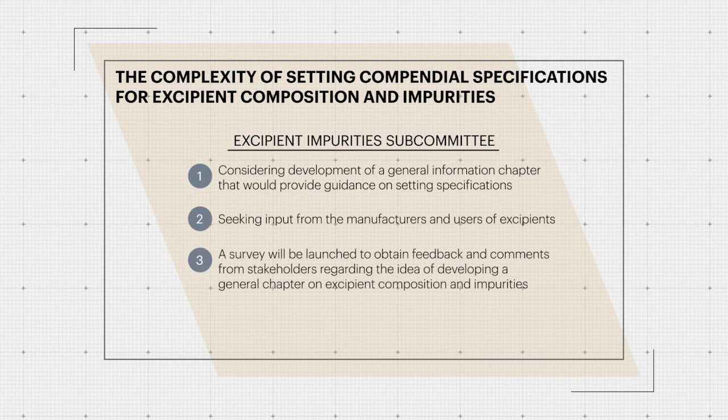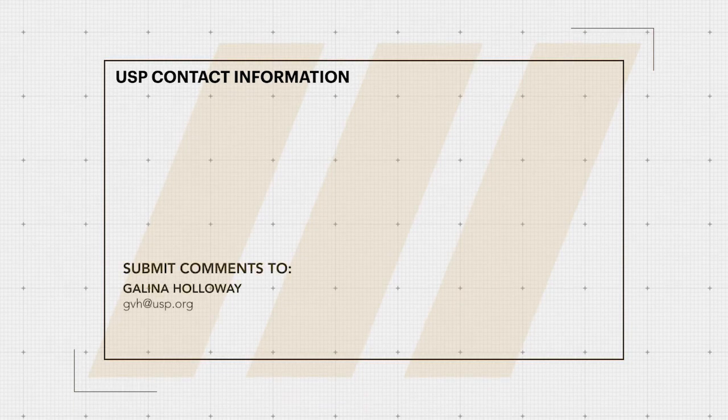To facilitate these goals, a survey will be launched concurrently with this PEF publication to obtain feedback and comments from stakeholders regarding the idea of developing a general chapter on Excipient Composition and Impurities. The link to the survey will be available in the Excipient section of the USP website at www.usp.org/excipients. All interested parties are encouraged to comment on the views and approaches presented by the Excipient Impurities Joint Subcommittee in this stimuli article. Please contact me at gvh@usp.org.